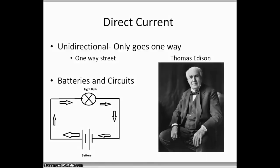The first current we're going to talk about is direct current. Direct current is what we call unidirectional, and what that means is it only goes one way. It's like a one-way road or a one-way street. This is just like batteries and circuits, or anything with your remote controls and your Xbox, Playstation, anything like that.